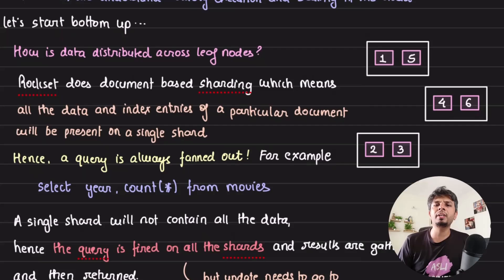First of all, leaf nodes is not a single machine - there are a set of machines acting as leaf nodes. When you have a set of machines acting as leaf nodes, how is data distributed between them?